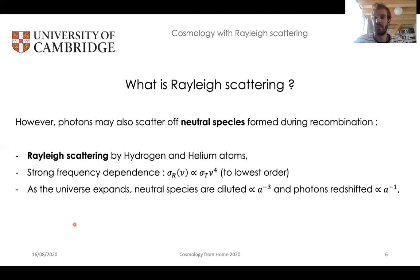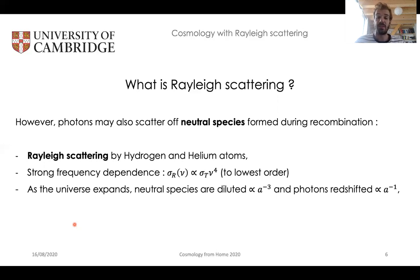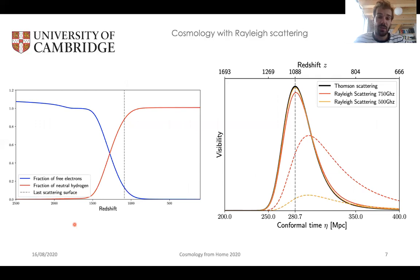On Earth, this is well observed — for example, when solar photons come through the atmosphere and are scattered by neutral species, that is what causes the blue sky and the red tinge of sunsets. However, right after recombination, we have some hydrogen and a tiny bit of helium that is formed, and the CMB photons can be scattered by these neutral species — that is what we call Rayleigh scattering of the CMB. This exhibits a strong frequency dependence, since it scales as ν⁴, where ν is the photon frequency. As the universe expands, the neutral species are diluted and the photons redshifted, which means that most of the Rayleigh scattering events are still localized right after recombination. To illustrate that, we can have a look at these two plots.